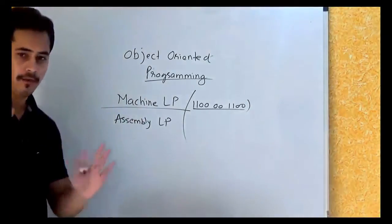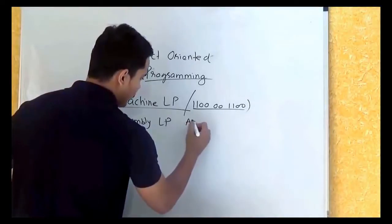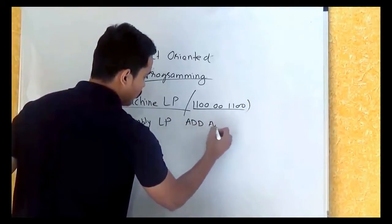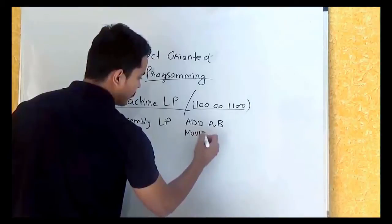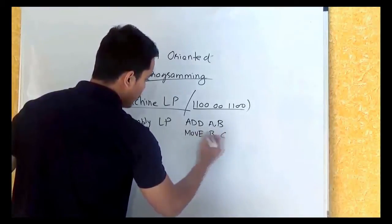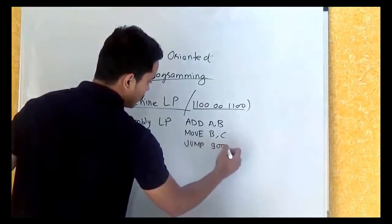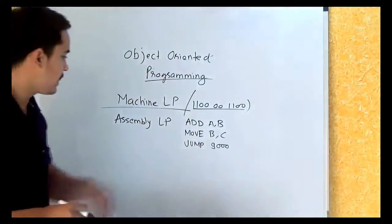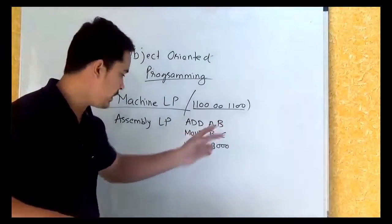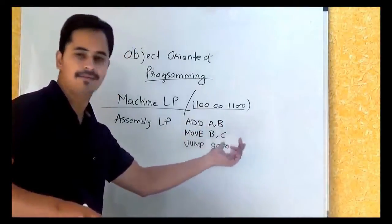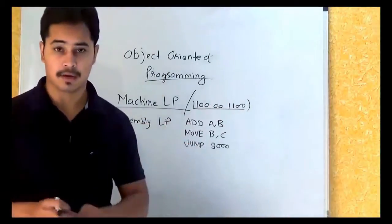Assembly language, if I were to give you an example, was something like: 'Add A to B, Move B to C, Jump 9000.' This basically means: add the value of A to B, then copy the value of B to C, then jump to instruction number 9000. So this is much better than machine language programming.